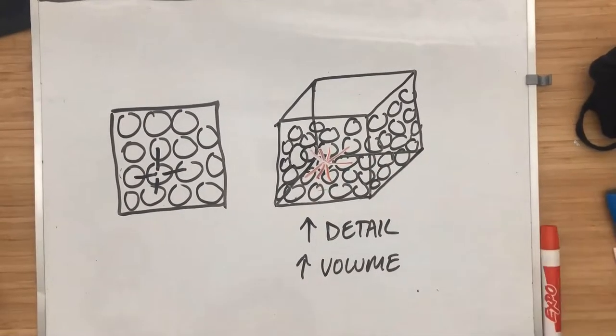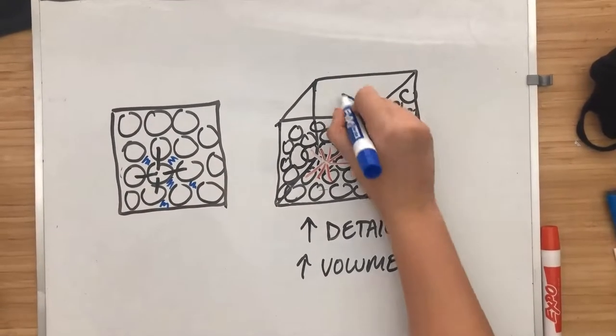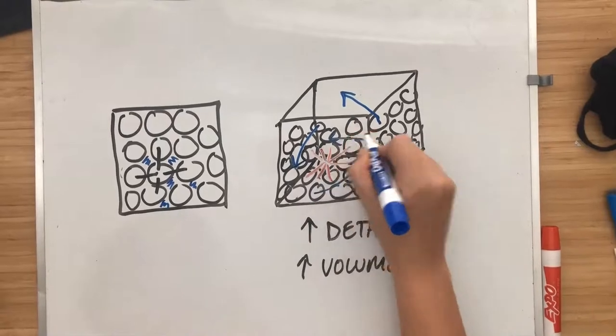If I were to shake both of these up, in the square, the beads might just vibrate around a little bit, but in the cube, the beads are free to move around in a lot of different directions.